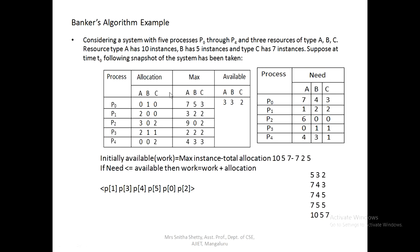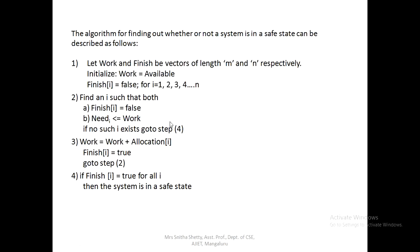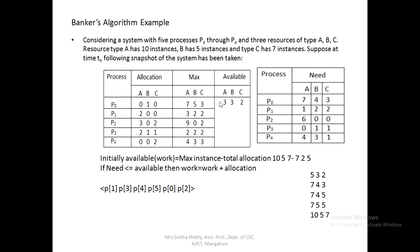Now let's see the logic behind the algorithm. There are four steps. First, let work and finish be vectors of length M and N respectively. Initially, work is equal to the available matrix. So we first need to calculate the value of the available matrix — how to calculate it is by finding the summation of the allocation matrix.